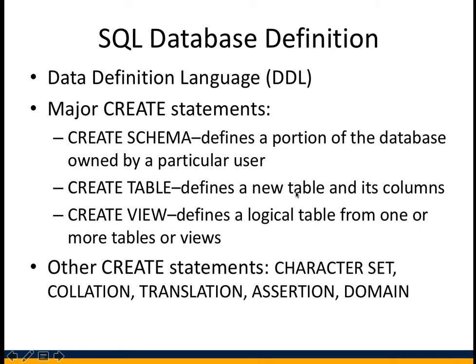Second, CREATE TABLE — you can define new tables and their columns. Where do these come from? From ER to relational design: ER diagram boxes each become a table, and attributes become columns. Some relationships become tables as well. Third, CREATE VIEW — views are logical tables you can create for queries, but they're not actual physical tables. For now, we're only dealing with creating a schema and putting tables in it.